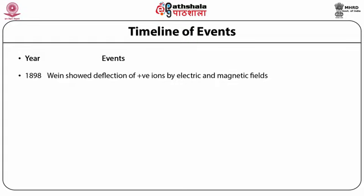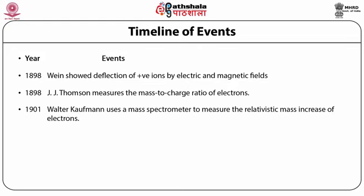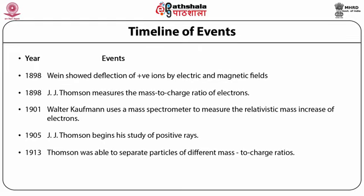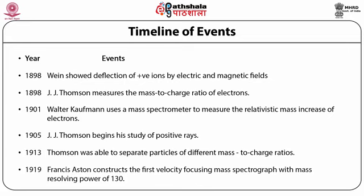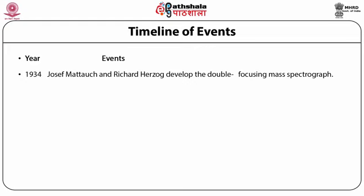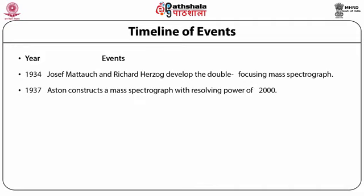Timeline of events: In 1898, Wien showed deflection of positive ions by electric and magnetic fields. In 1898, J.J. Thomson measured the mass-to-charge ratio of electrons. In 1901, Walter Kaufmann used a mass spectrometer to measure the relativistic mass increase of electrons. In 1905, J.J. Thomson began his study of positive rays. In 1913, Thomson was able to separate particles of different mass-to-charge ratios. In 1919, Francis Aston constructed the first velocity-focusing mass spectrograph with a mass resolving power of 130. In 1934, Joseph Mattauch and Richard Herzog developed the double-focusing mass spectrograph.